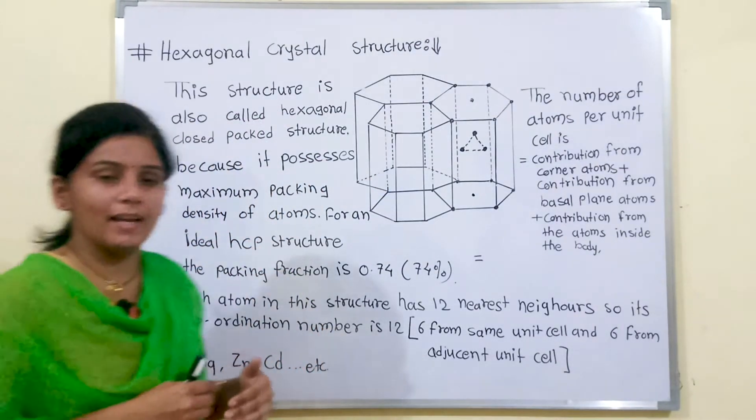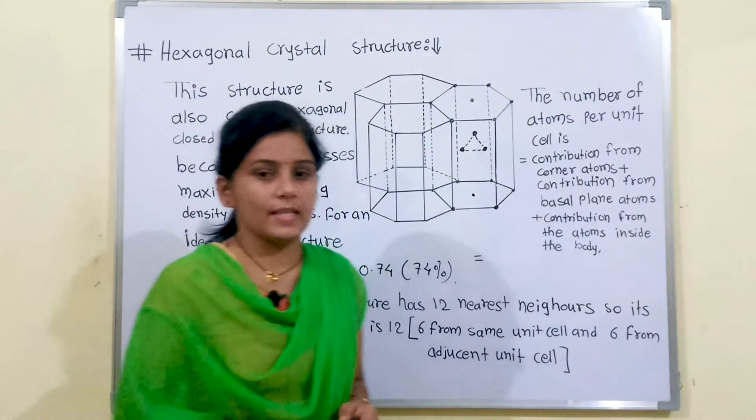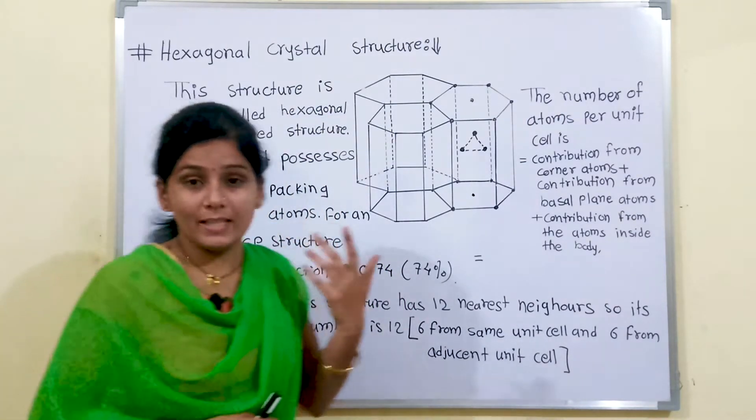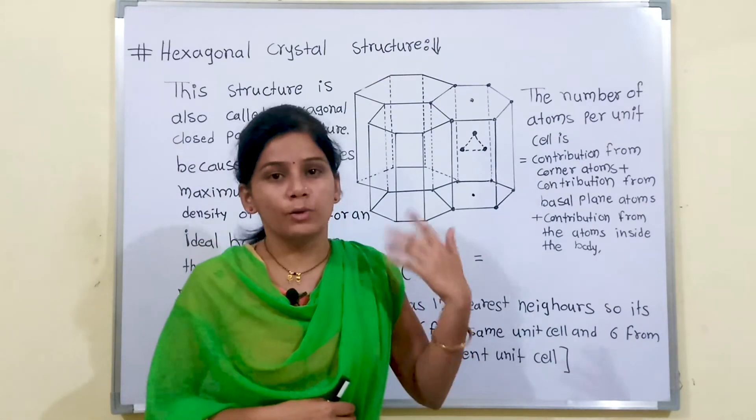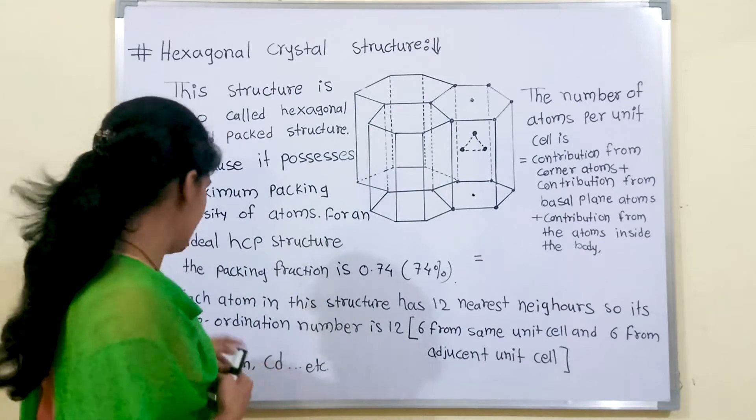For an ideal HCP structure the packing fraction is 74%. We have discussed about what is meant by packing fraction and how to calculate the packing fraction in previous lecture.